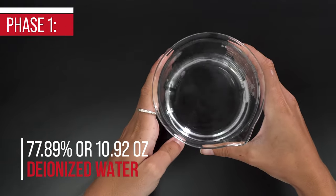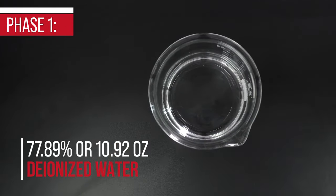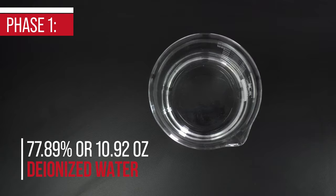To make 14 ounces of product, you will need Phase 1: 77.89% or 10.92 ounces of deionized water.